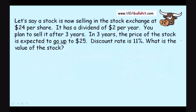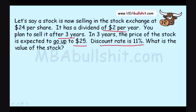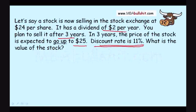Let's say a stock is now selling in the stock exchange at $24 per share, it has a dividend of $2 per year, you plan to sell it after 3 years, and in 3 years the price of the stock is expected to go up to $25. The discount rate — remember net present value and present value — is 11%. With stocks, this is not necessarily the bank rate; it's what we call a discount rate or required return. So now, what is the value of the stock?